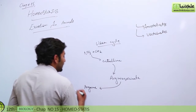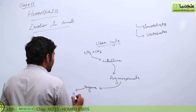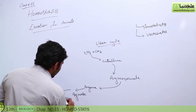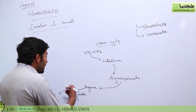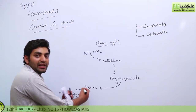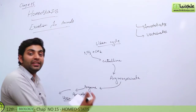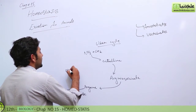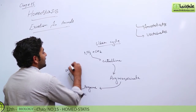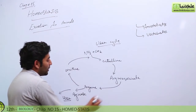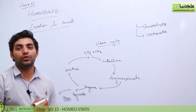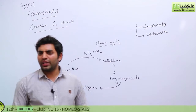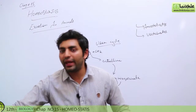The arginine compound is acted upon by the enzyme arginase, which produces urea. After urea is formed, the cycle continues. This whole urea cycle is very important for short answer questions.